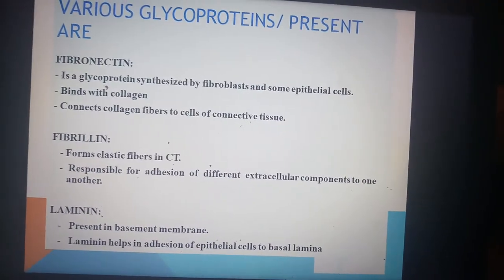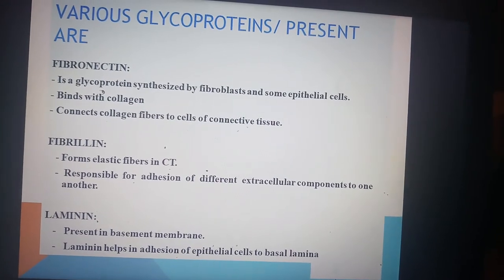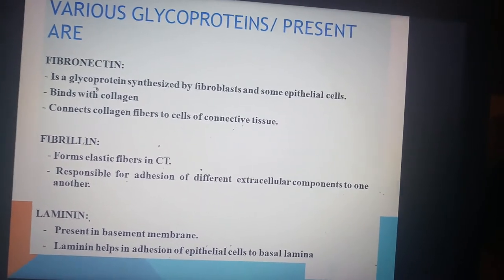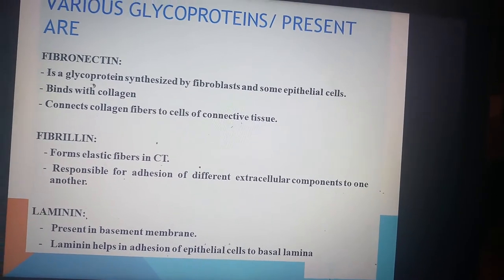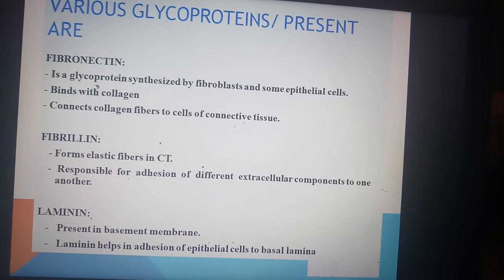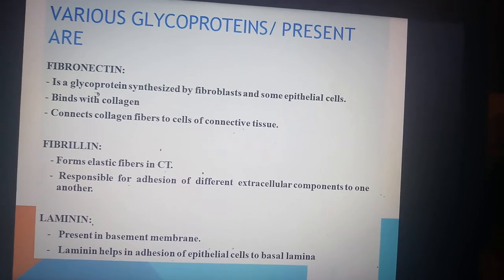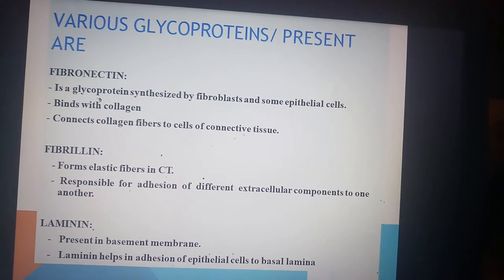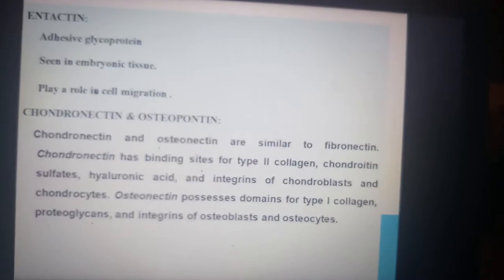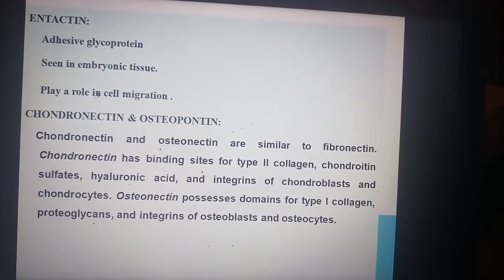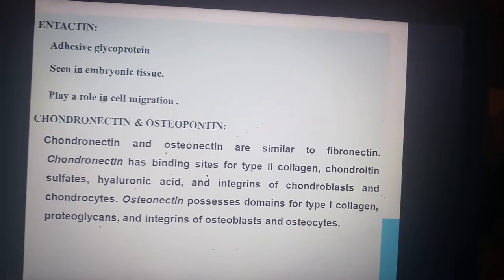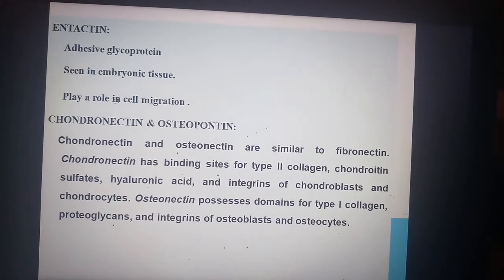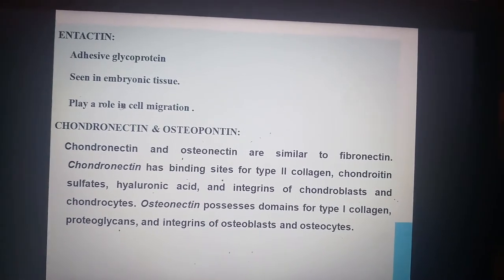Fibronectin is a glycoprotein synthesized by fibroblasts and some epithelial cells; it binds with collagen and connects collagen fibers to cells of the connective tissue. Fibrillin forms the elastic fibers in connective tissue and is responsible for adhesion of different extracellular components to one another. Laminin is present in the basement membrane and helps in adhesion of epithelial cells to the basal lamina. Intactin is an adhesive glycoprotein seen in embryonic tissue and plays a role in cell migration.